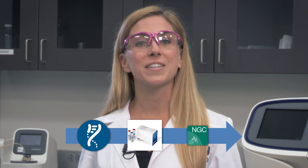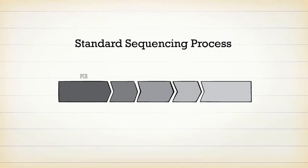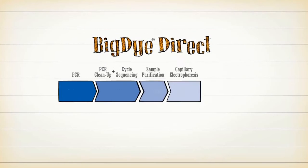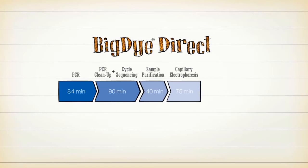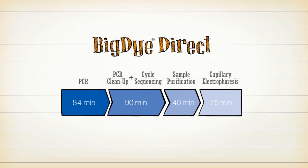Next is performing the Sanger Sequencing reaction. If you want to cut some time, the Big Dye Direct Sequencing Kit can save you approximately 3 hours compared to the traditional Sanger Sequencing workflow. The new workflow with Big Dye Direct combines the PCR cleanup and cycle sequencing into a single step and requires a lot less hands-on time. However, using this workflow does require your primers to be ordered with M13 Tails, which is also available through the Primer Designer tool.